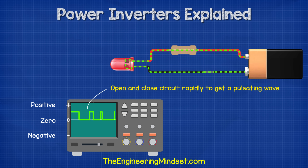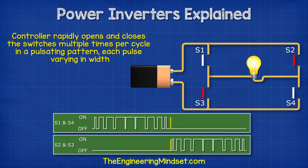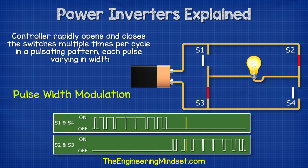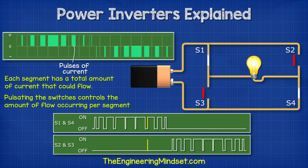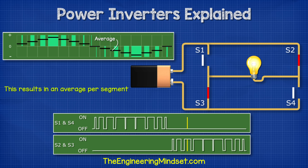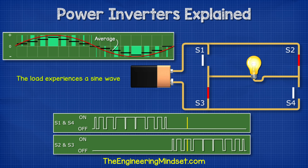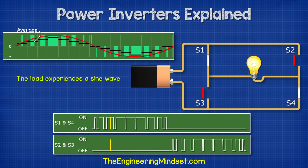Earlier in the video we saw that we can open and close the switch at different speeds and durations to change the waveform. We can do that here too. We use a controller to rapidly open and close the switches multiple times per cycle in a pulsating pattern, each pulse varying in width. This is known as pulse-width modulation. The cycle is broken up into multiple smaller segments; each segment has a total amount of current that could flow, but by rapidly pulsating the switches, we control the amount of flow occurring per segment. This results in an average current per segment which increases and decreases, giving us a wave. The load will therefore experience a sine wave. The more segments we have, the closer it mimics a smooth wave.